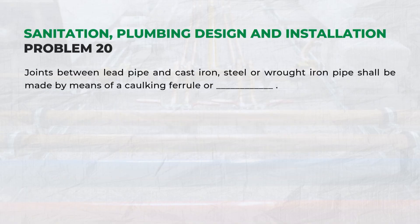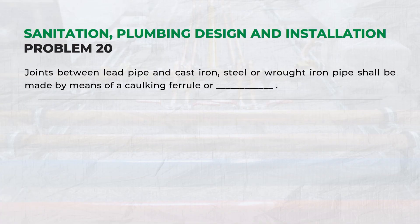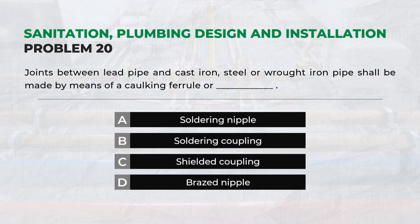Joints between lead pipe and cast iron, steel, or wrought iron pipe shall be made by means of a caulking ferrule or — Answer A: Soldering nipple.